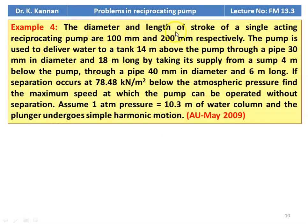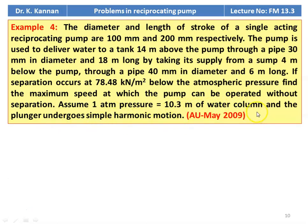Example number 4: The diameter and stroke length of a single acting reciprocating pump are 100 mm and 200 mm respectively. The pump delivers water to a tank 14 m above the pump through a pipe of 30 mm diameter and 18 m long, taking supply from a sump 4 m below the pump through a pipe of 40 mm diameter and 6 m long. Separation occurs at 78.48 kN/m² below atmospheric pressure. Find the maximum speed without separation. Assume one atmosphere = 10.3 m of water column and simple harmonic motion. This is from May 2009 question paper.